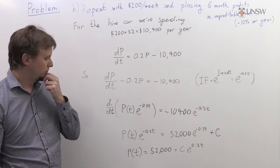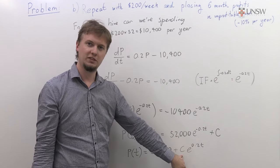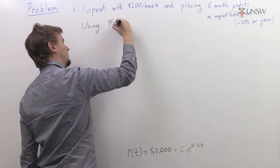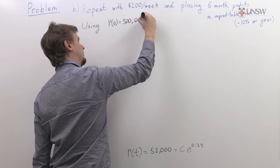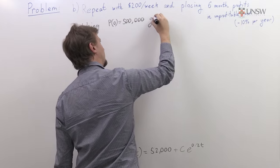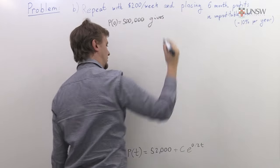We can multiply by this function here and just get P(t) by itself. If we now use our initial condition, we can find this constant C. Our initial investment was half a million dollars.